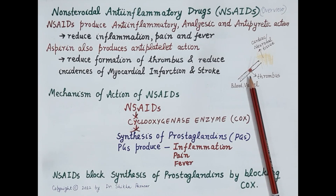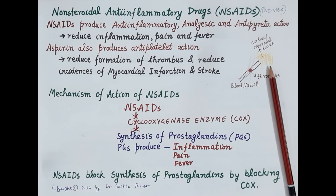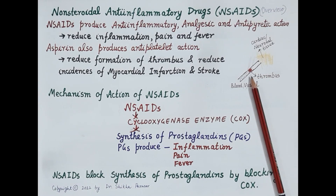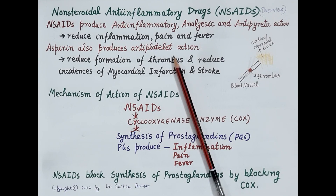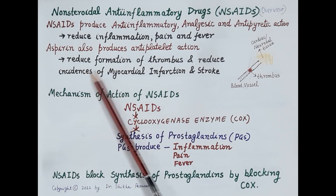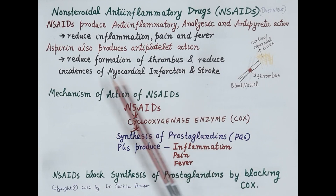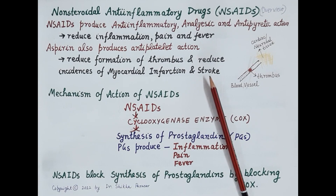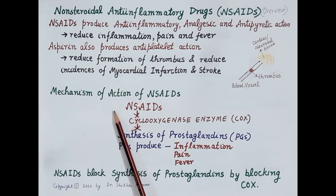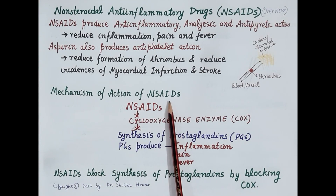If a thrombus is formed, it will block the blood vessels. If a coronary artery is blocked, blood supply to the cardiac tissue is stopped, causing myocardial infarction. If the cerebral artery is blocked, supply to neurons is stopped, causing stroke. So aspirin produces anti-platelet action and reduces formation of thrombus, thereby reducing the incidences of myocardial infarction and stroke.